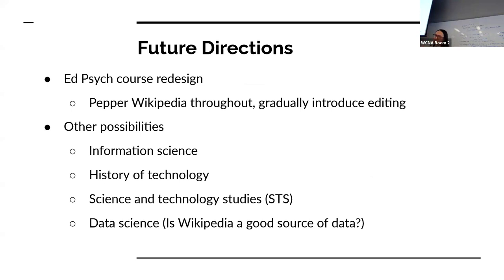Introducing Wikipedia can be done in a whole bunch of different classes — like information science, history of technology, science and technology studies. It would be really cool to talk about data science, because there's so much harvesting of data from Wikipedia — to what extent is that useful?